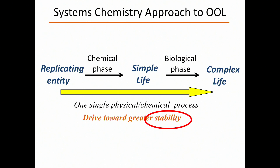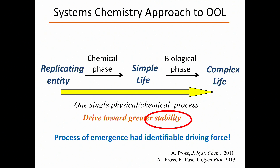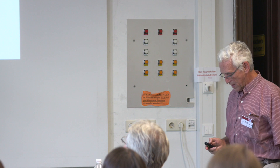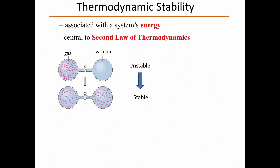What drove that process? The drive towards greater stability. But to understand that statement, we have to talk about stability — a complicated word with different kinds. There's thermodynamic stability, associated with the system's energy, central to which is the second law of thermodynamics. If you have a gas in a cylinder connected to an empty cylinder and you open the tap, the gas spreads over the two — going from an unstable state to a stable state. What Boltzmann showed towards the end of the 19th century is that this happens because we're going from a low probability state to a high probability state, captured by his famous entropy equation.